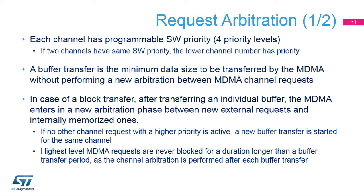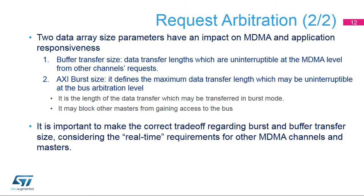Two data array size parameters have an impact on MDMA and application responsiveness. First, buffer transfer size: data transfer lengths which are uninterruptible at the MDMA level from other channels' requests. Second, AXI burst size: it defines the maximum data transfer length which may be uninterruptible at the bus arbitration level. Third, it is the length of the data transfer which may be transferred in burst mode and may block other masters from gaining access to the bus.